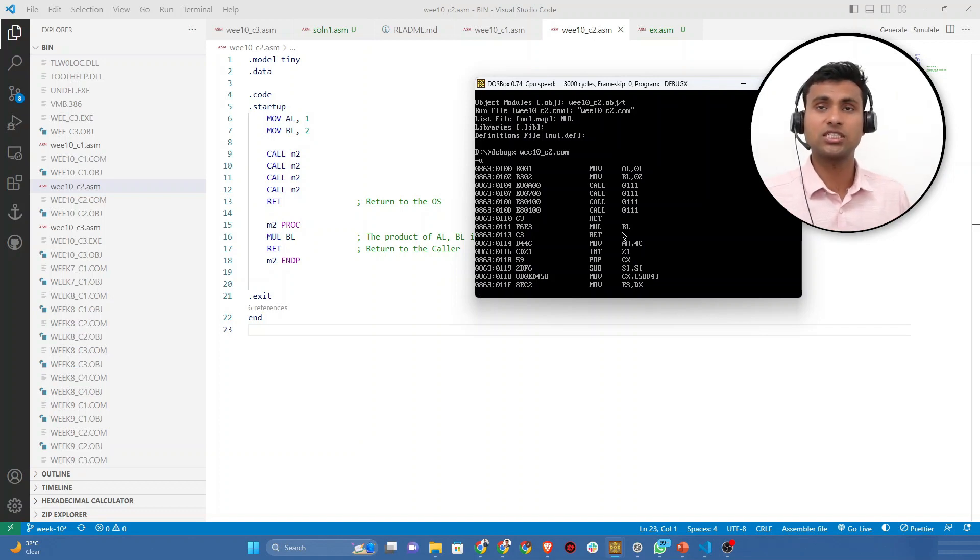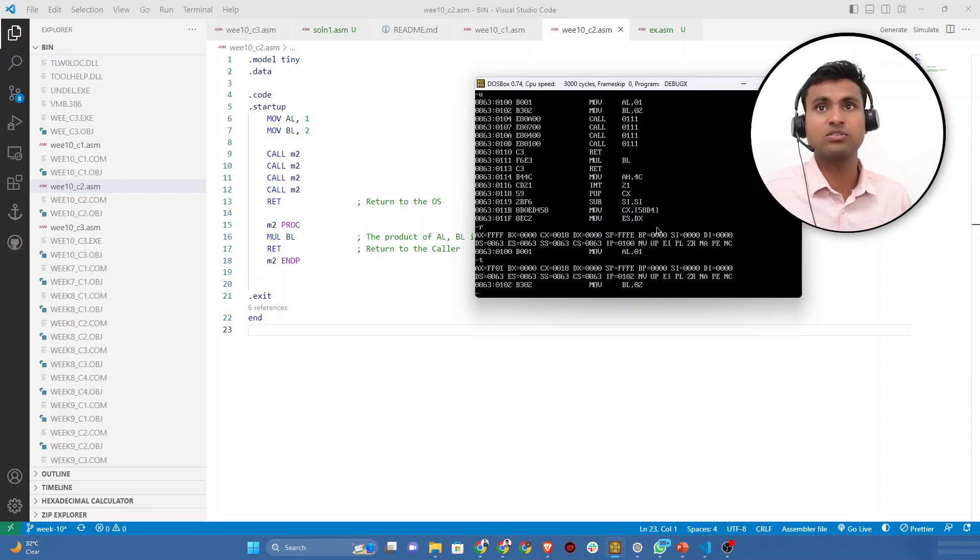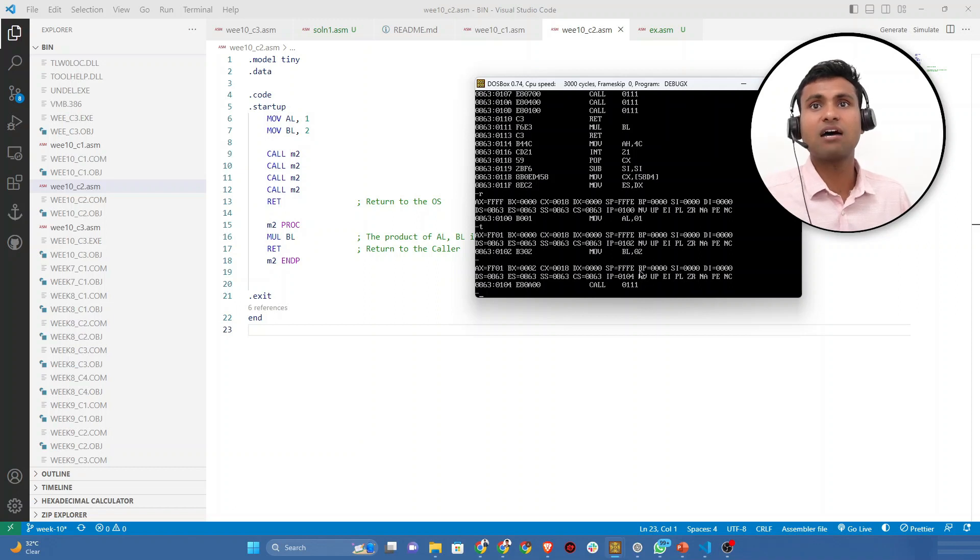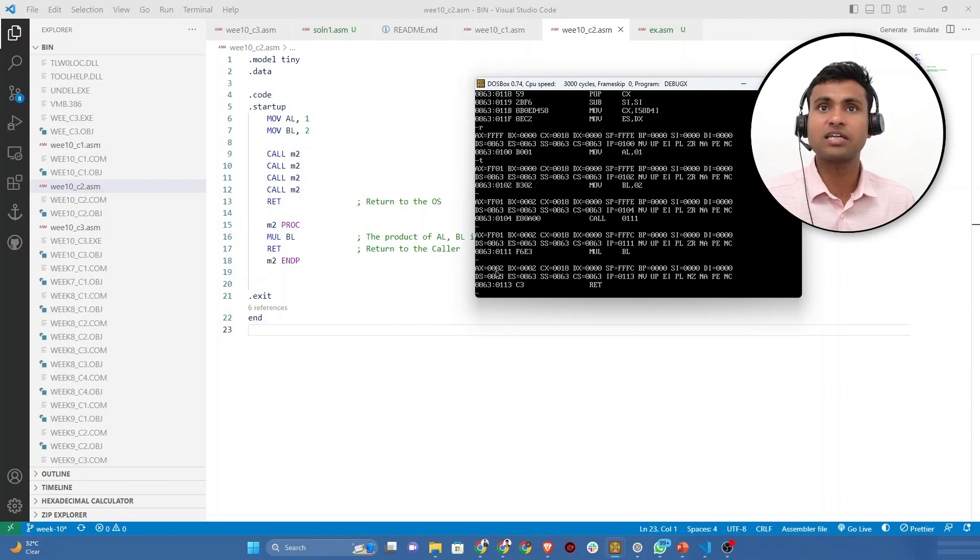Let's execute this for now. The first instruction is move AL. Let's execute this one by one. After the first call statement, it will execute the MUL operation once, so the result will now be stored in the AX register. The first time it multiplies, the result is 2.